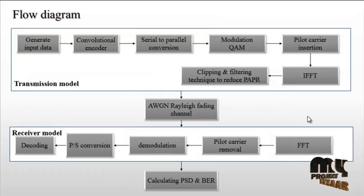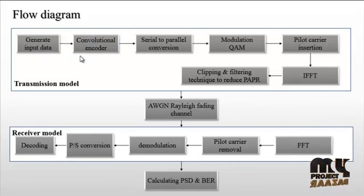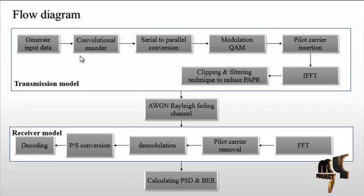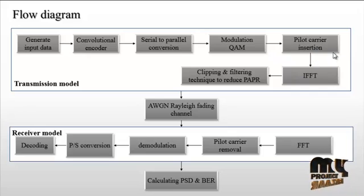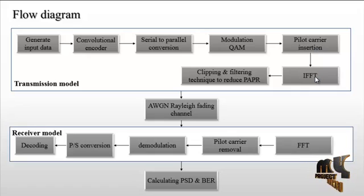Let us discuss the flow diagram of the process. First, generate the input data, then a convolutional encoder is used to encode the input data, followed by serial to parallel conversion. The encoded data is then converted through modulation — QAM, that is Quadrature Amplitude Modulation. Then pilot carrier insertion is used to enable processing of the IFFT data.